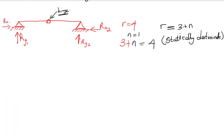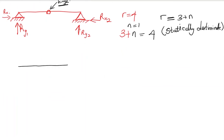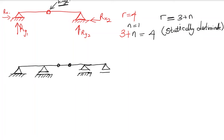Let's look at another example. We have a beam with a pin support here, then another support which is a sliding support, then two hinges, and another sliding support at the end.